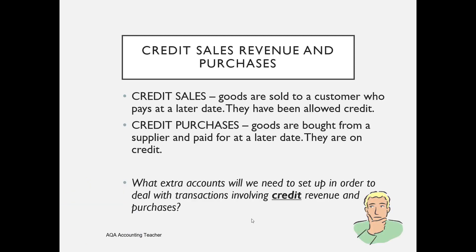Moving on to credit sales and purchases: credit sales is where goods are sold to a customer who will pay us at a later date — that customer has been allowed credit. Credit purchases is where we've bought goods for resale from a supplier and will pay at a later date. We can still use the same sales and purchase accounts, but we'll need extra accounts to deal with people who owe us money — trade receivables — and people to whom we owe money — trade payables.